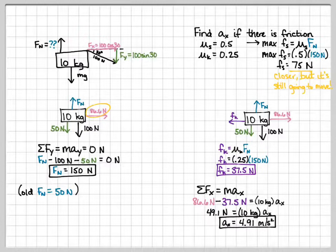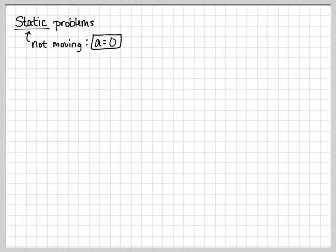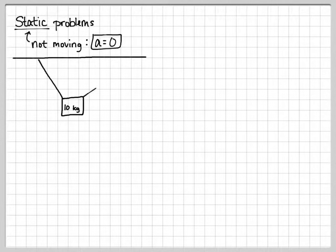So, this is one type of problem in two dimensions. The other one we're going to talk about today, they're called static problems. So, static, it means it's not moving. So, if it's not moving, that means the acceleration is equal to zero. So, static problems usually go something along the lines of, you have a block suspended from the ceiling by two or more cables. In this example, it's suspended by two cables. One is at 60 degrees and one is at 30 degrees.